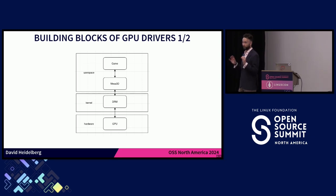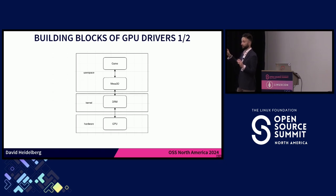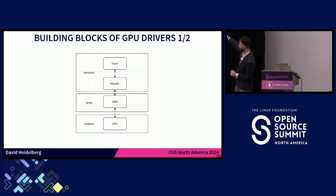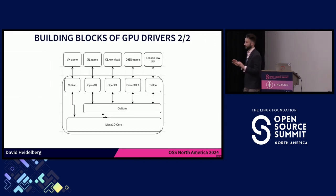For you to understand, we generally have the game you want to play. The game interacts with our library Mesa 3D, and Mesa 3D interacts with DRM and the DRM stack in the Linux kernel, which interacts with the GPU. Our testing is between Mesa and GPU — that's the part we're testing. I'll explain why we're testing the GPU even if we want to test our Mesa.